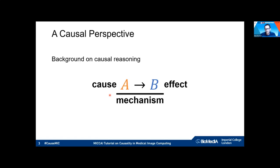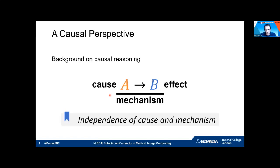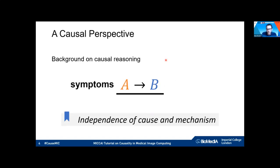We call the transition from cause to effect a mechanism. An underlying principle in causality is the independence of causal mechanisms: the mechanism going from A to B always exists in the same way, independent of how likely A alone is. The marginal p(A) is independent of the mechanism p(B|A).